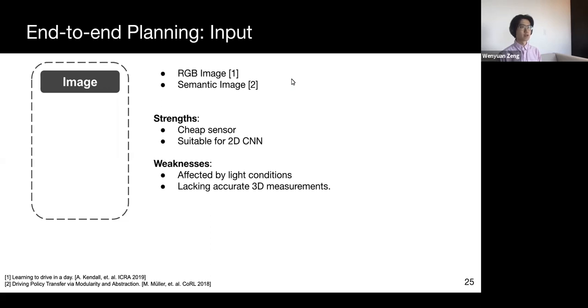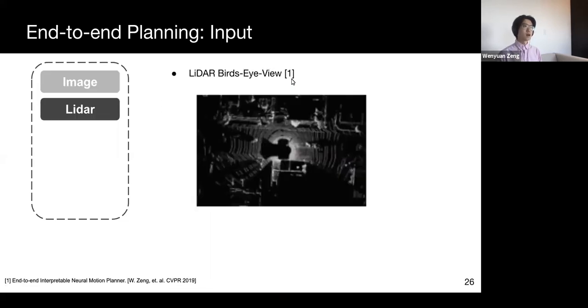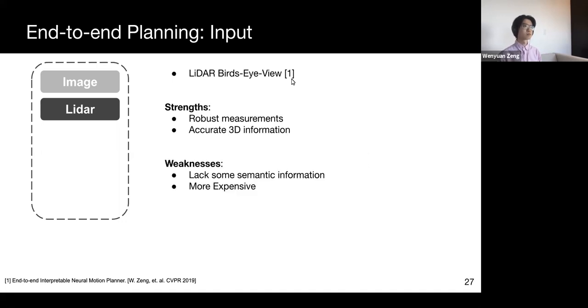Although camera sensors are cheap, images suffer a lot from poor light conditions and lack accurate 3D information. Therefore, industry, as well as more and more academic labs are exploring another modality, which is LiDAR point clouds. LiDAR is a sparse and irregular data format, and thus it is not naturally suited for CNN architectures. In the end-to-end interpretable neural motion planner, the authors project LiDAR into a bird's-eye-view 2D image-like representation and then process it by a neural network. There are also other possibilities, such as using PointNet or sparse convolutions. In contrast to camera images, LiDAR provides more robust and accurate 3D measurements, but on the other hand, it is more expensive and loses some semantic information, such as the turning light of a car. Therefore, these two modalities are sometimes used together.